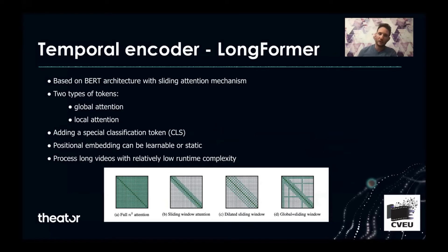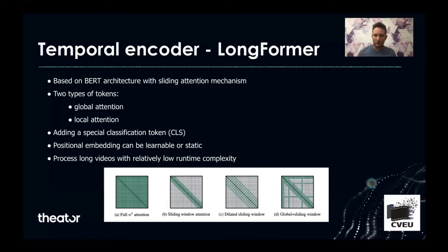The Longformer is based on BERT architecture with a sliding attention mechanism. It has two types of tokens: the first one is the global token, which attends to all the other tokens, and the local attention, which uses the sliding window mechanism. We add a special classification token, the CLS, in the same method that the VIT paper does for image classification, and the positional embedding here can be learned or a static function.